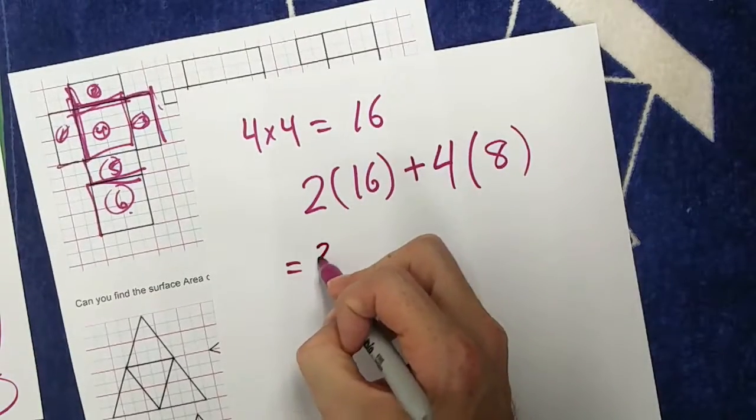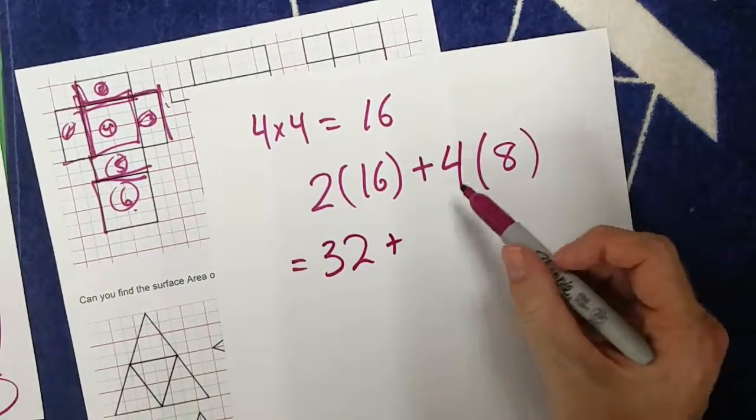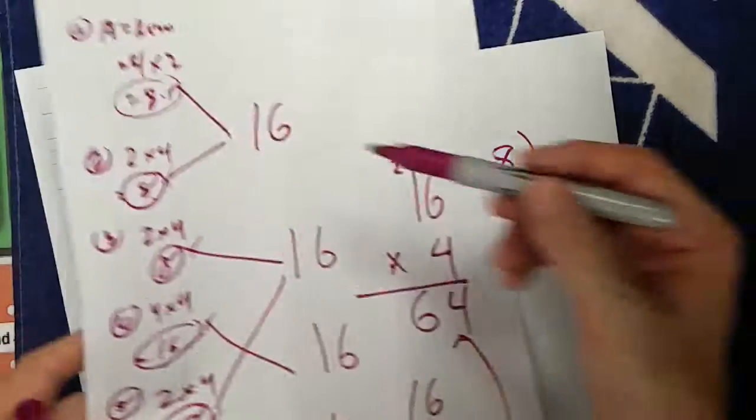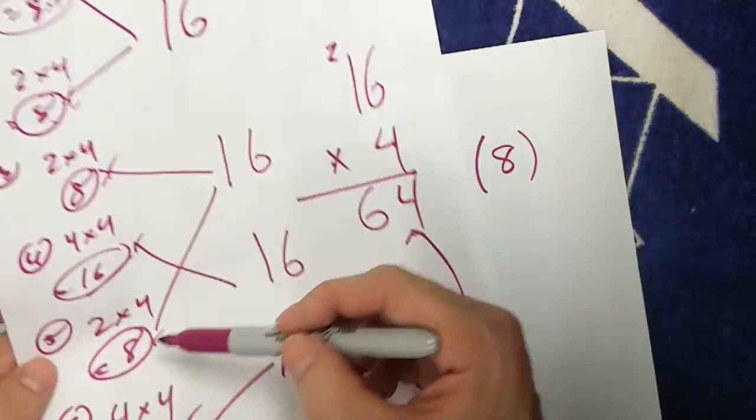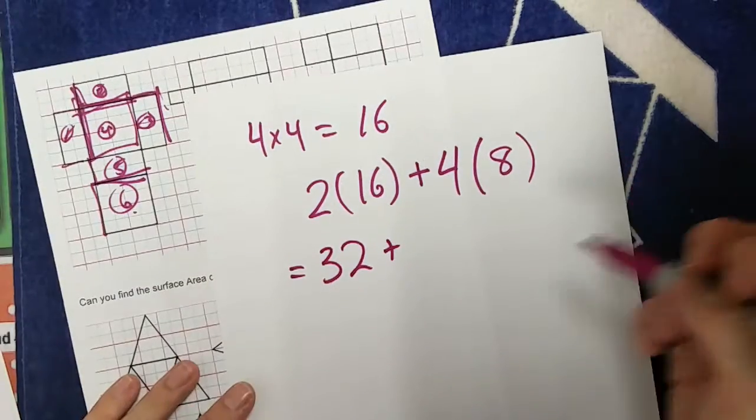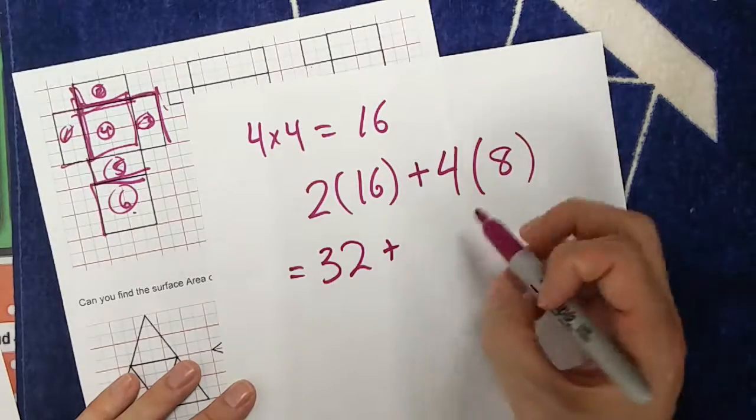Here's my 16 and my 16, which is 32, plus my 4 groups of 8. How many 8s do I have? I had 1, 2, 3, 4. 4 groups of 8. 4 groups of 8 is of course 32.